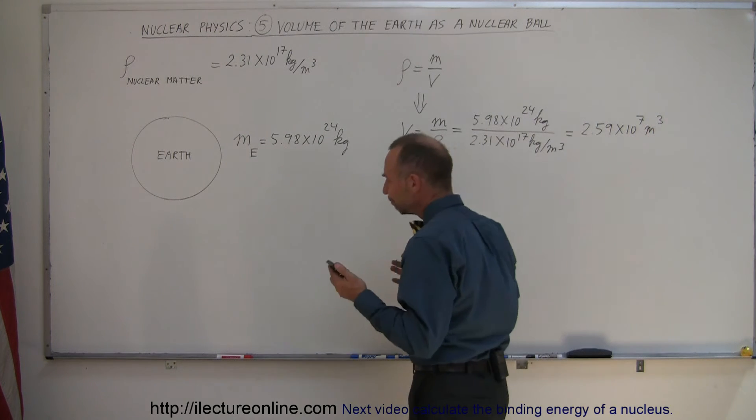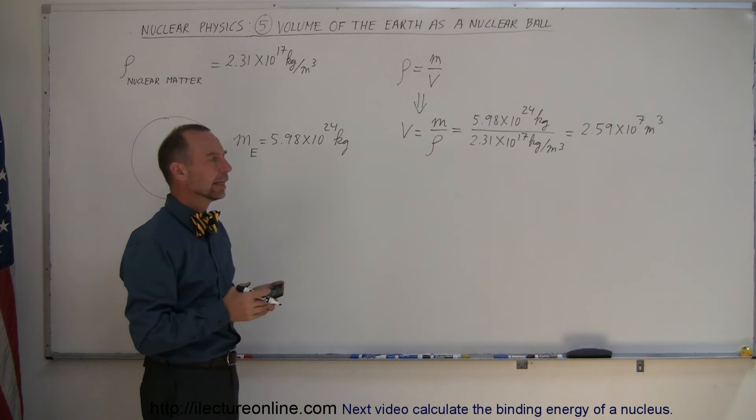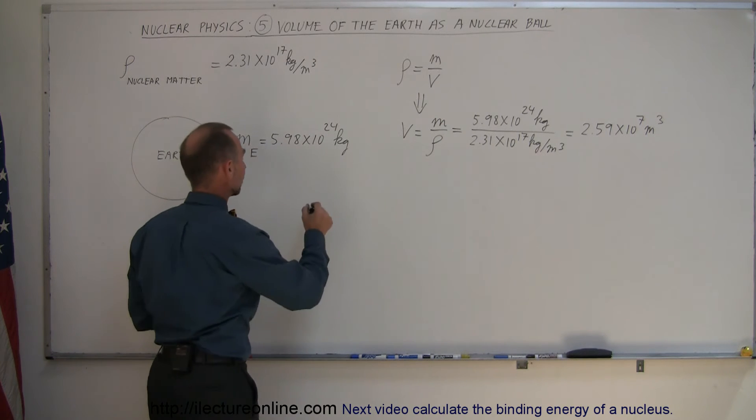What does that mean? So 25.9 million cubic meters. It doesn't give you a good feel for the size. So let's see what would be the radius of the Earth.